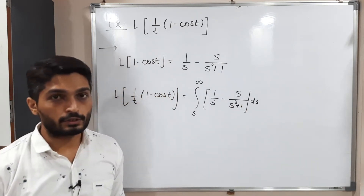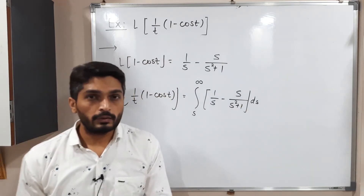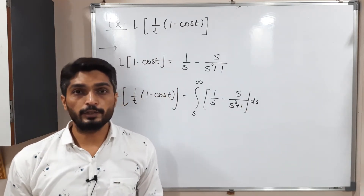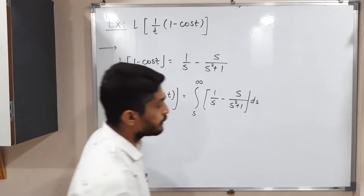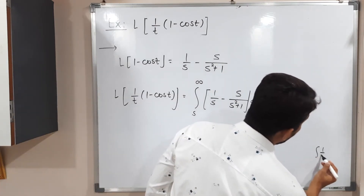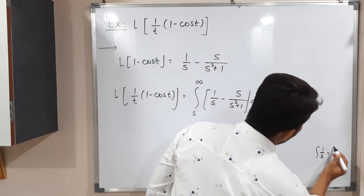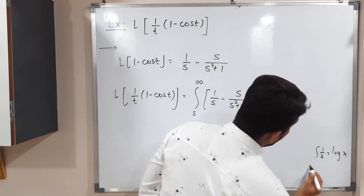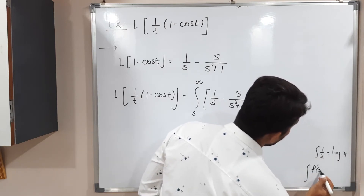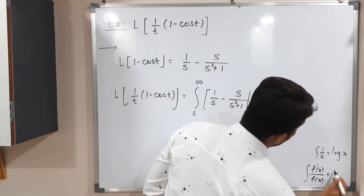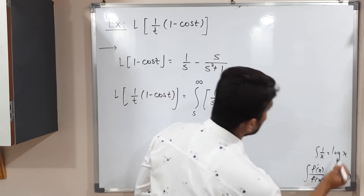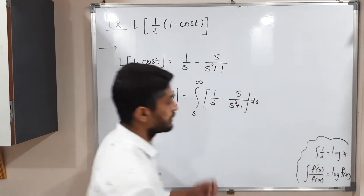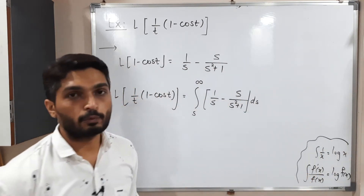So we have to solve this integration. There are two important formulas of integration we frequently use here. The first is the integral of one by X, which gives log X. The second is the integral of F dash of X upon F of X, which equals log F of X. These two formulas we frequently use in this type of integration.